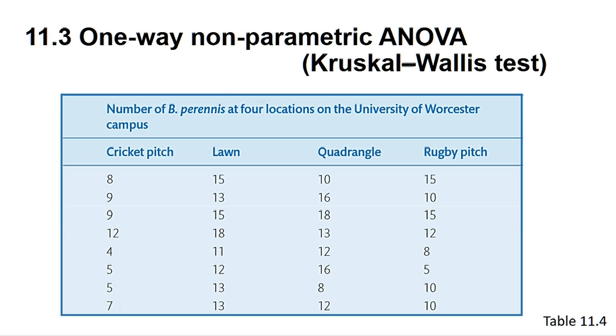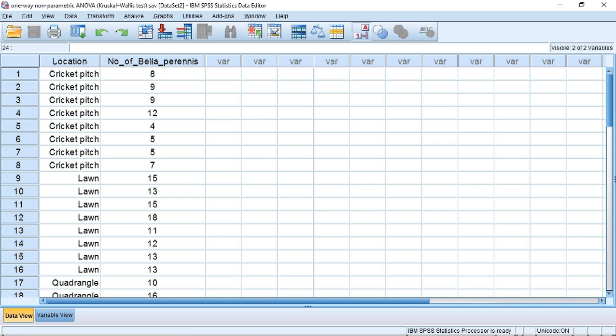In the example we are using here, eight quadrats were sampled for the number of daisy plants growing in four distinct grassed areas with different uses at the University of Worcester. These areas were the cricket pitch, the lawn, the quadrangle and the rugby pitch. The data can be found in table 11.4. I have already entered the data into SPSS. Please see the web walkthrough for more details on how to set the variables up.